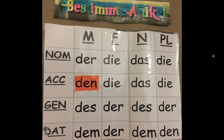In German there are three genders that have nothing to do with one's sex, but rather the epistemological construct of the language. So they'll be der for masculine, die for feminine, and das for neuter, and then the plural is die.